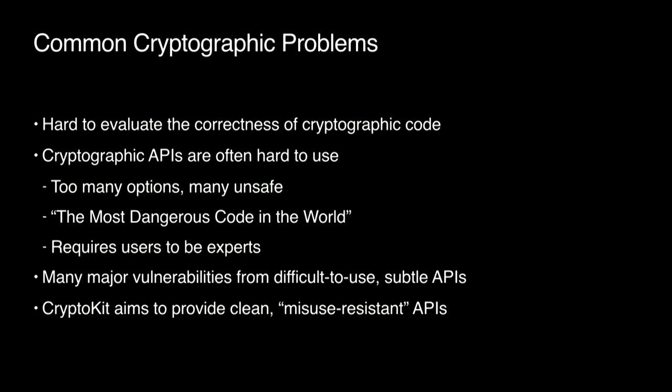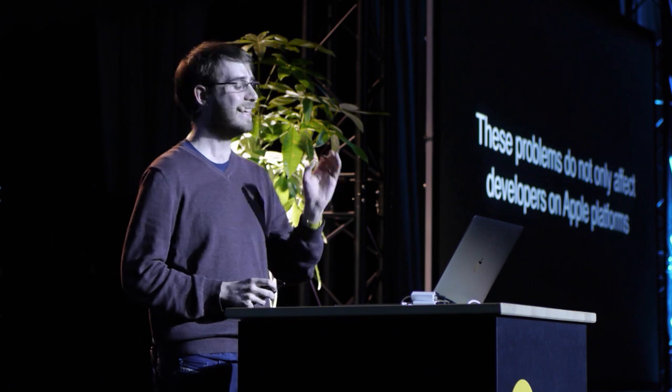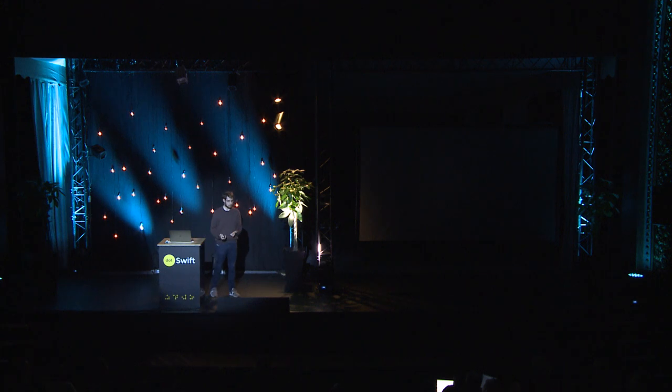CryptoKit aims to provide these misuse-resistant APIs, but CryptoKit is an API that is only available on Apple platforms. And here's the thing — none of the problems I just outlined are specific to developers on Apple platforms. Unfriendly, difficult-to-use cryptographic APIs are rife on other platforms as well. It's important that our entire industry be working together to build better, safer cryptographic APIs. The reason is that many applications that run on Apple platforms have components that run on other platforms — back-end servers or web app versions. These other components need to do similar work, they are a critical part of the cryptography pipeline, and they must also handle the data correctly. To that end, I'm thrilled today to be able to announce our newest tool: Swift Crypto.